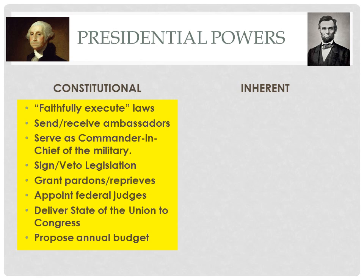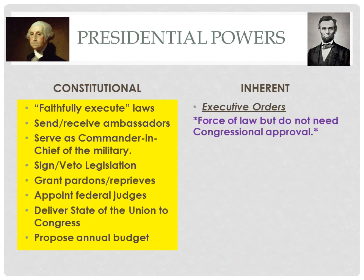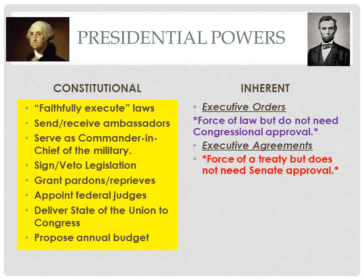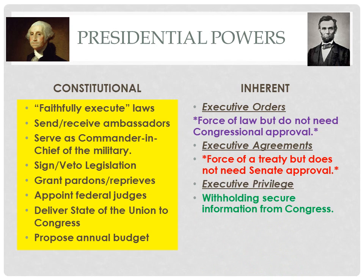Though the president has been given these powers directly in the Constitution, he has also used powers that have gone beyond his constitutional authority. We call these types of powers inherent powers. Some of these include the use of the executive order, which has the same force of a law but does not need Congress's approval, executive agreements, which have the same force as a treaty but don't need the Senate's approval, and the use of executive privilege, which allows the president to withhold secure information from Congress.